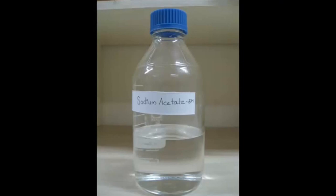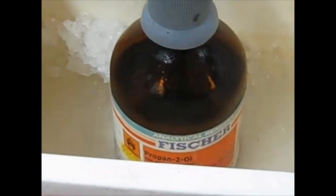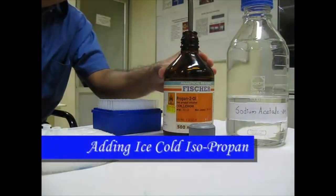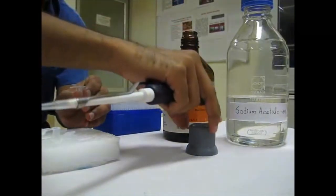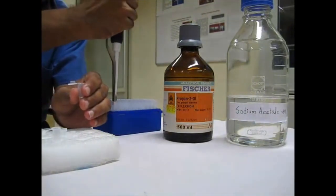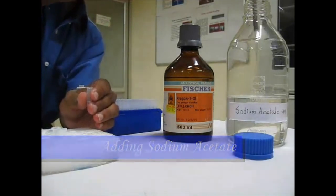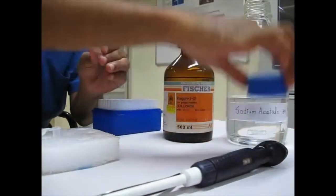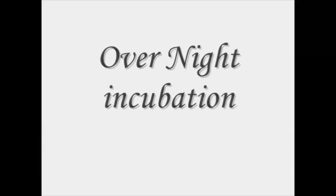Sodium acetate is used to speed up the precipitation of DNA by ethanol. Isopropanol should be placed in ice while using. To the transferred aqueous layer we would add ice cold isopropanol and equal volume of sodium acetate. After this step the samples can be stored overnight.